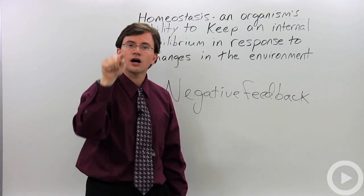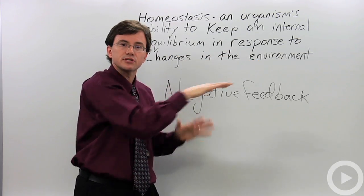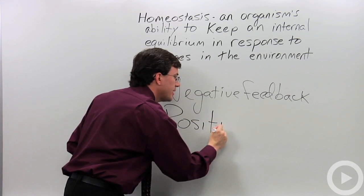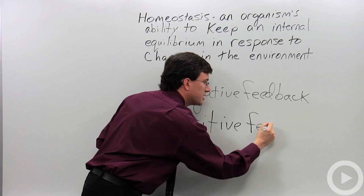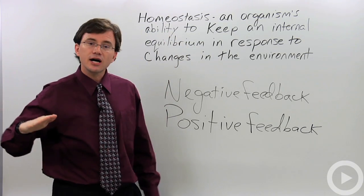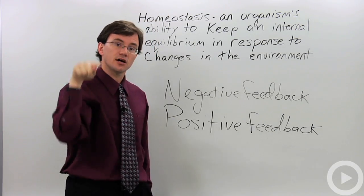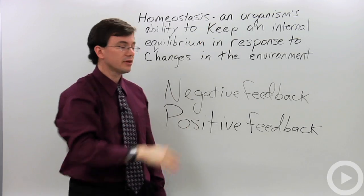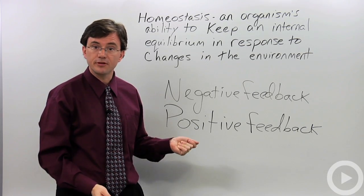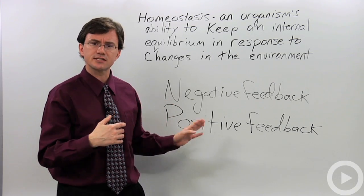With negative feedback, you tend to see the body oscillating up and down around its set point to stay in a stable range. That's very different from positive feedback, which is rare in biology. Instead of keeping you at a stable temperature or blood glucose level, positive feedback tends to increase the response — more and more and more — leading to exponential growth rather than a nice oscillation. It's rare because it tends to cause things to be overused. The immune system is one example: it responds in a positive feedback manner, but that's for emergency use only.